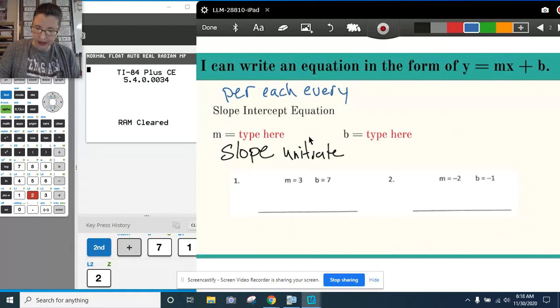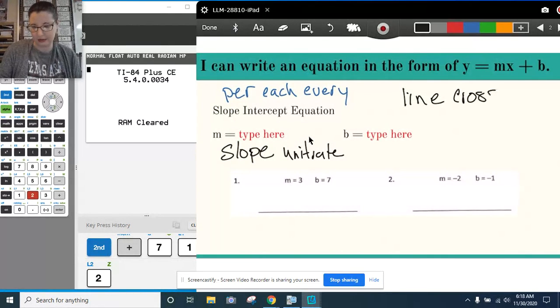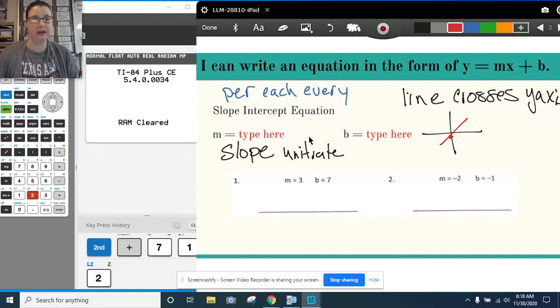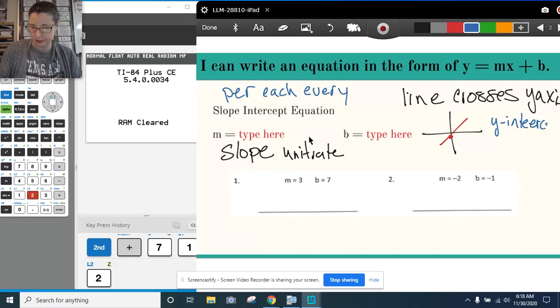Now when we're looking at our b, b is where we cross the y-axis, where the line crosses the y-axis. So this could be anywhere on here. So right here, there is where it crosses the y-axis. Now the other term for that is called the y-intercept.